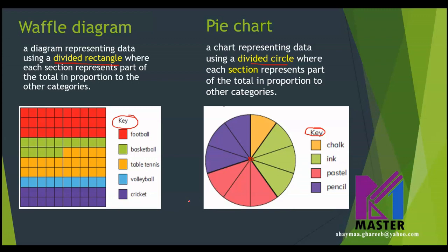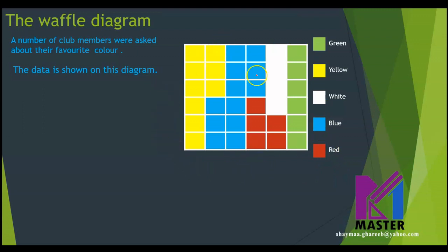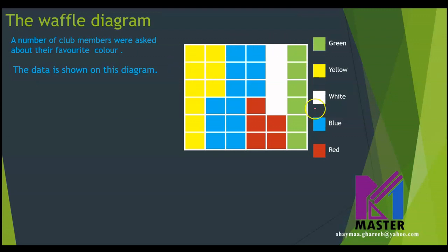Now we are going to look at an example on the waffle diagram. A number of club members were asked about their favorite color. The data is shown on this diagram. We have green, yellow, white, blue, and red. Each color represents the number of members that prefer that color. When I look at the waffle diagram, can I know how many club members participated in this survey? No, I cannot tell, because the waffle diagram only shows us the data as fractions or parts in proportion to each other.